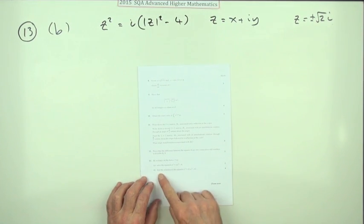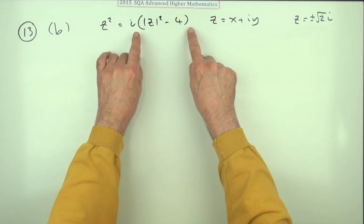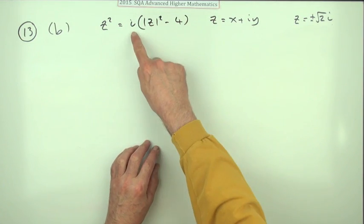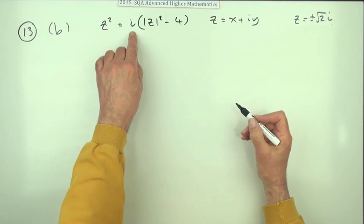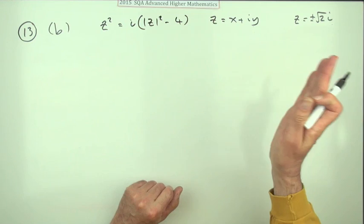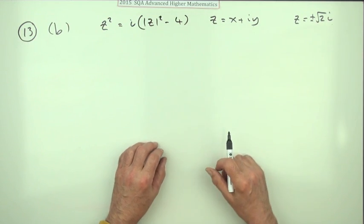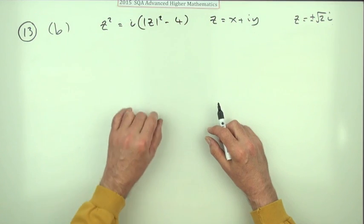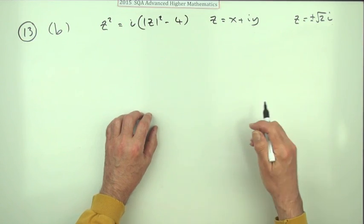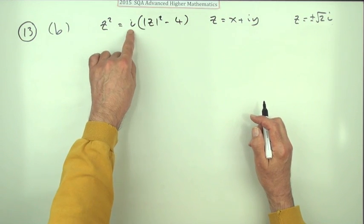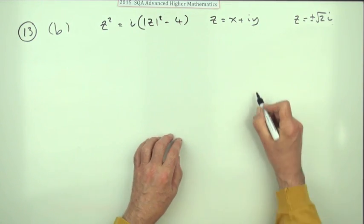Part b: find the solutions to this equation for four marks. The first thing to notice is that it's the same as part a but with the addition of multiplying by i. Remembering that when you multiply complex numbers you add their arguments, multiplying by i has the effect of rotating through 90 degrees. Since we're taking a square root — by De Moivre's — squaring doubles the angle, so taking the square root halves it, giving a 45 degree rotation.